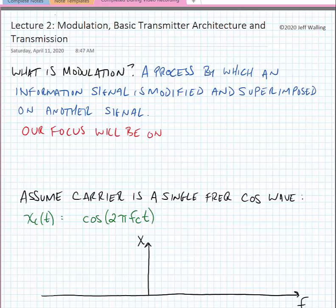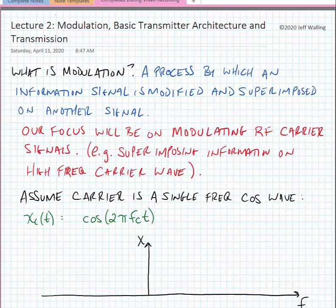The general definition of modulation that we'll be using is a process by which an information bearing signal is modified and superimposed on another signal. Our focus will be on modulating RF carrier signals specifically, or superimposing information on high-frequency carrier waves.